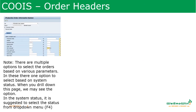Here we see multiple selection parameters: plant level, production order numbers, production plant, planning plant, order type, MRP controller. At operation level also, there are many parameters. One of the selection parameters is system status. Whenever you are selecting system status, it is suggested to use the status from the drop-down menu using F4 — don't enter them manually, as it may not be accepted correctly by the system.